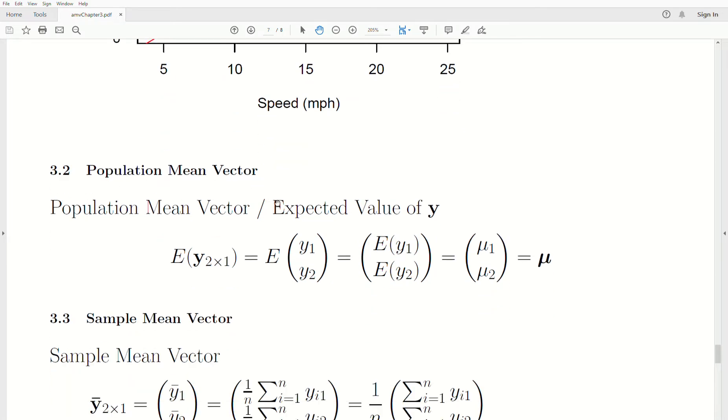The population mean vector, often called the expected value of y, is the same thing. The expected value of this vector, which is two by one, it's a random bivariate vector with two components. When you take the expected value, it goes into each component, and the expected value of y1 is whatever that population mean is for that first variable. So mu1 is the first component, and mu2 is the second component. In multivariate analysis, we think of that as a vector, so we'll just call it mu in bold, which means it's a vector.